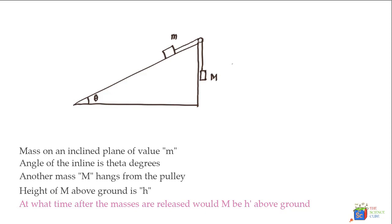And it's also given in the problem that the height above which this mass is over the ground level is small h. So we'll go ahead and label small h over here. The question is at what time after the two masses are released would the bigger mass be on a level which is h dash above the ground. So let's say this is h dash. And we have to find the time after the system is released that this mass is at level h dash.